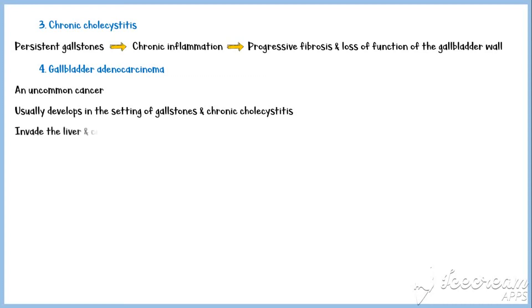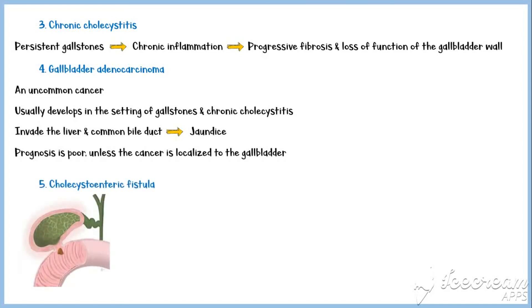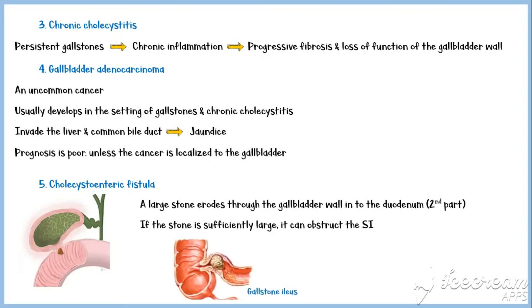Gallbladder cancers commonly invade the liver and common bile duct, producing jaundice. Prognosis of gallbladder cancer is poor unless it is localized to the gallbladder. Cholecystoenteric fistula is a rare complication. It occurs when a large stone erodes through the gallbladder wall into the duodenum, as shown in the image. If the stone is sufficiently large, it can obstruct the small intestine, usually at the level of the ileum, a condition known as gallstone ileus.